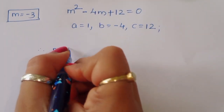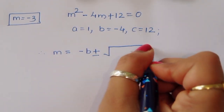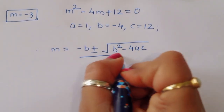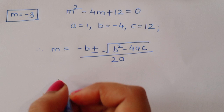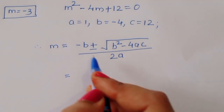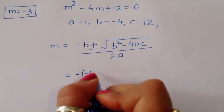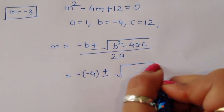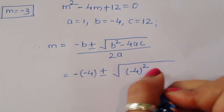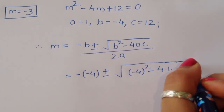Using the quadratic formula: m equals minus b plus or minus square root of (b squared minus 4ac) divided by 2a. Substituting: minus b is minus(minus 4) which is 4, b squared is (minus 4) squared equals 16, minus 4 times a times c is minus 4 times 1 times 12, all divided by 2 times 1.